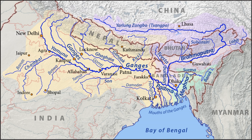Its catchment lies in the states of Uttar Pradesh 294,364 square kilometers, Madhya Pradesh 198,962 square kilometers, Bihar 143,961 square kilometers, Rajasthan 112,490 square kilometers, West Bengal 71,485 square kilometers, and Haryana 34,341 square kilometers.